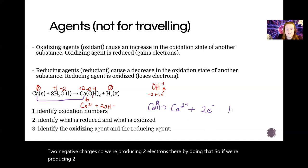If we're producing two electrons, that's losing electrons, which is oxidation. So the calcium is oxidized.